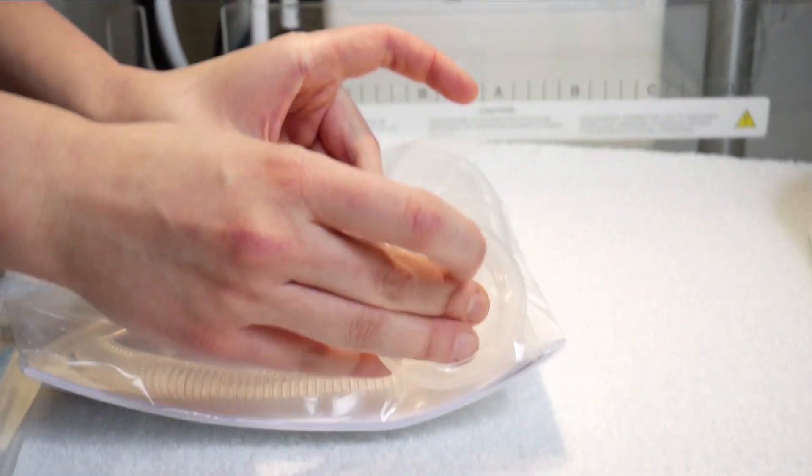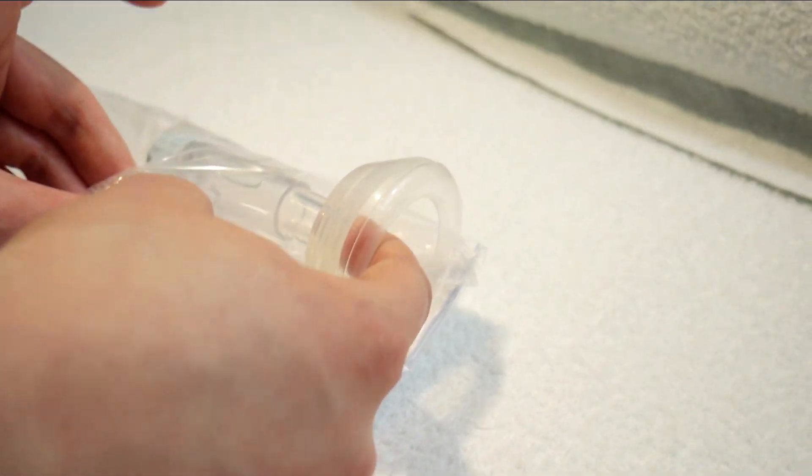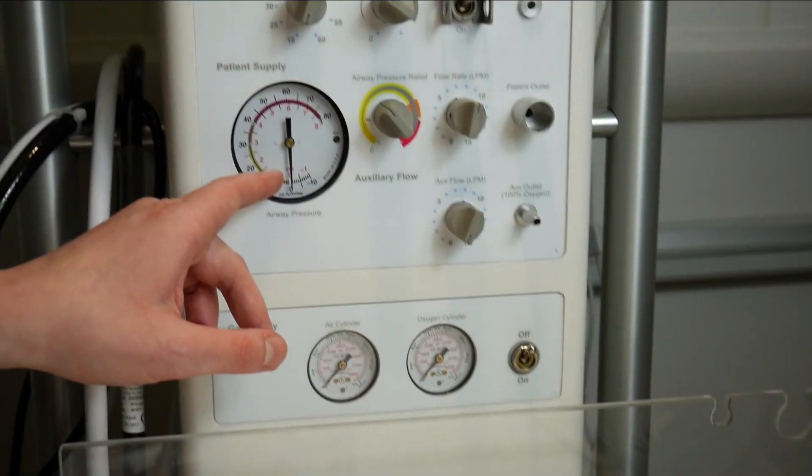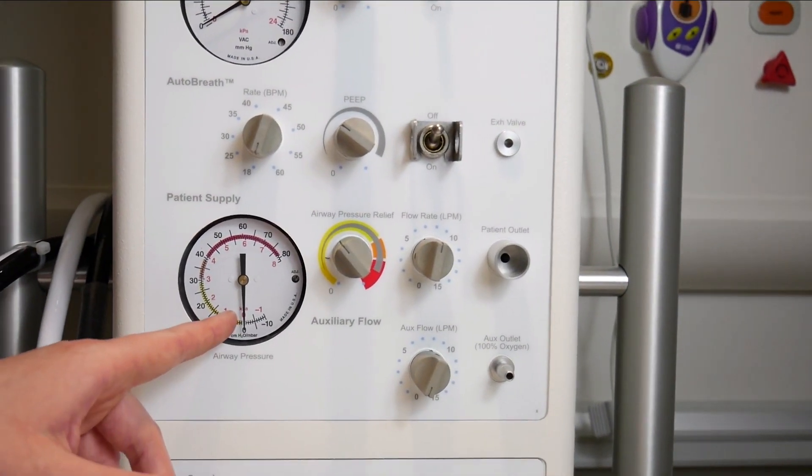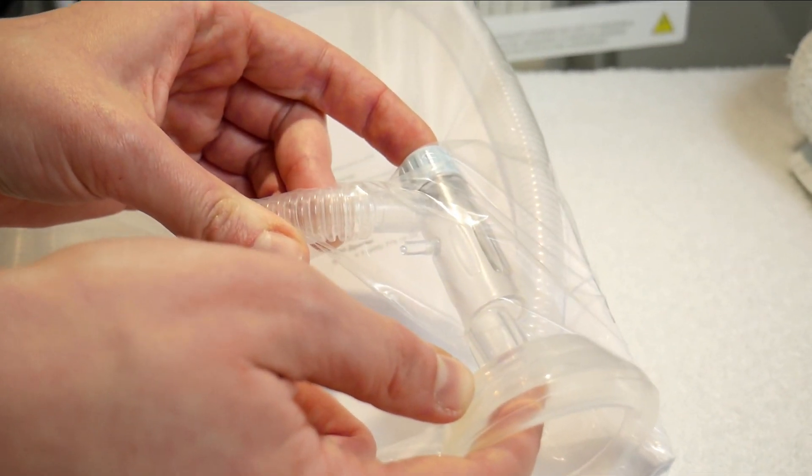Once the T-piece is connected to the gas outlet, you can test your pressures. First by occluding the valve inside the mask, the needle will move to your desired level of PEEP. To check your peak inspiratory pressure, occlude the valve at the top of the T-piece.